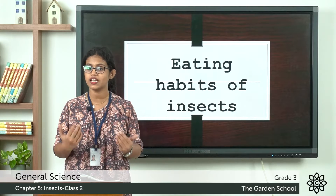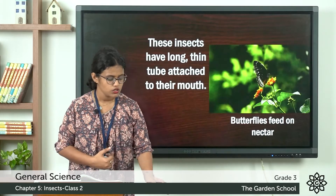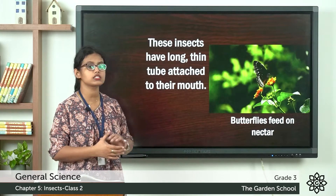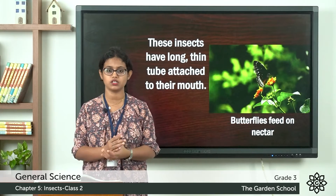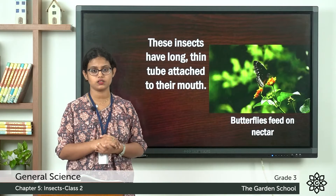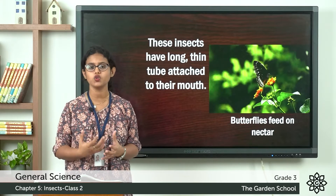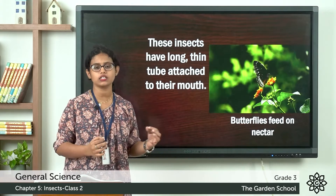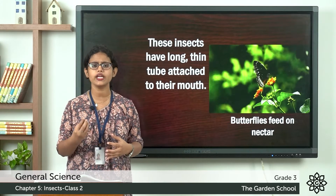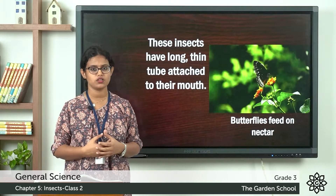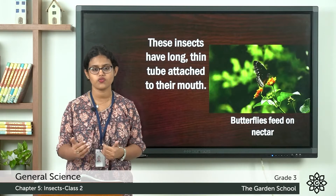Do all insects eat the same food? No, different insects eat different types of food. There are insects like butterflies, moths, and bees. They feed on nectar and they have a thin tube-like mouthpart which helps them to suck the nectar from the flower. Nectar is the sweet liquid which is present on the flower, and butterflies, moths, and bees depend on nectar for their food.